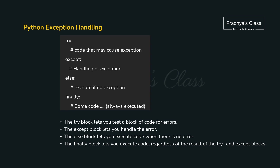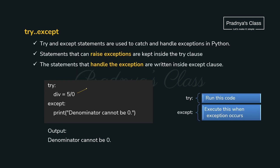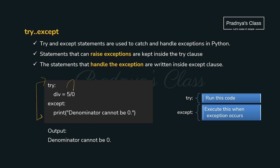We understood how exceptions occur, but it is the responsibility of the programmer to handle them so that our program will not stop abruptly. For that we use the try-except block. The code which may raise an exception we write in the try block. If there is a try block, an except block is mandatory. In case of an exception, the control goes to the except block. In this code, an exception will occur because we are dividing by zero — so the control goes to the except block and prints the message.